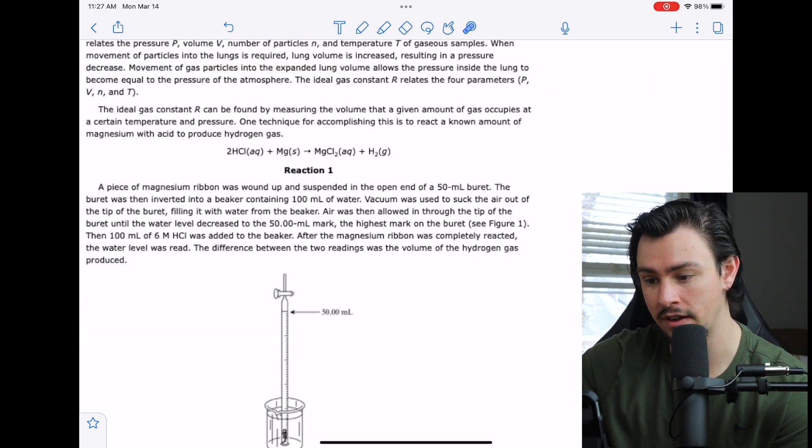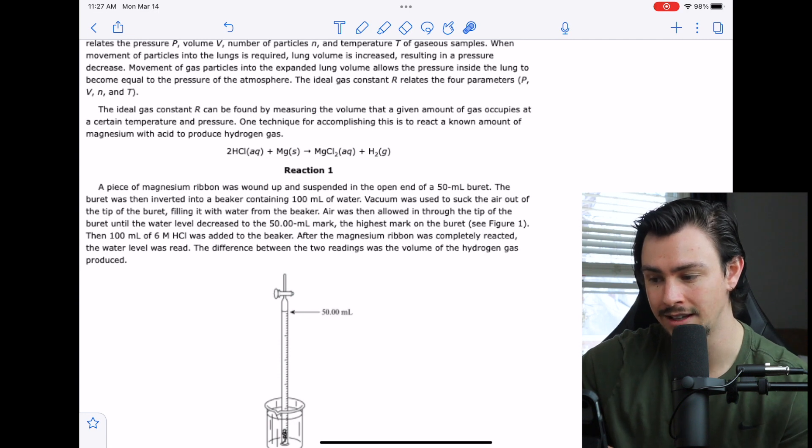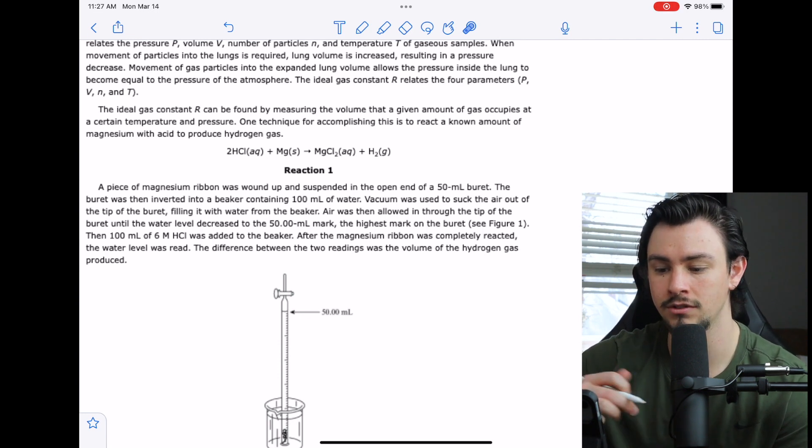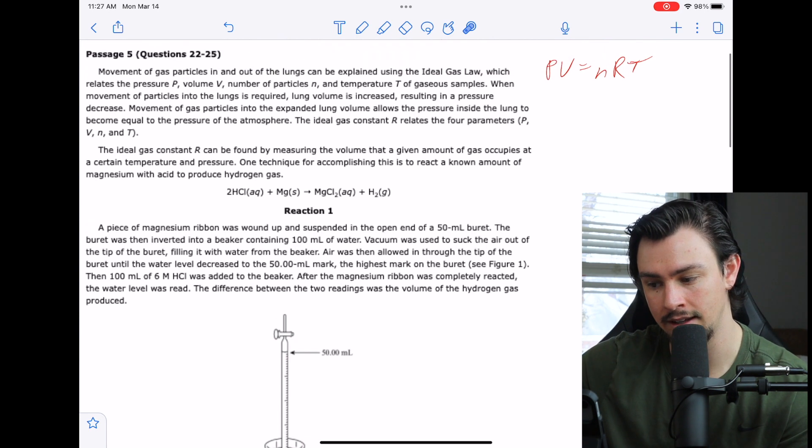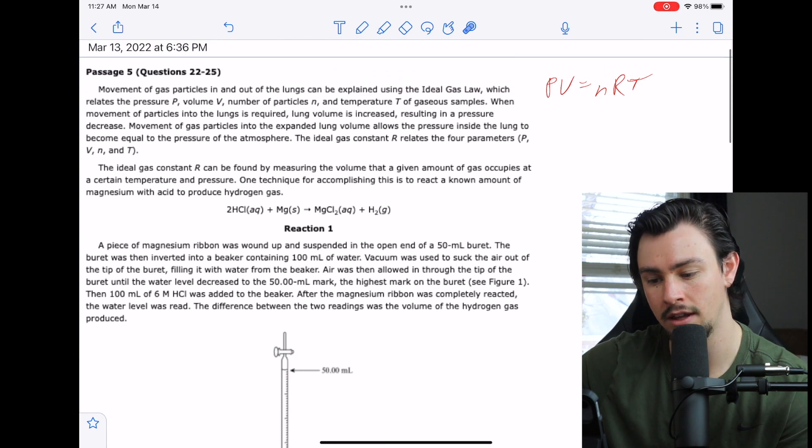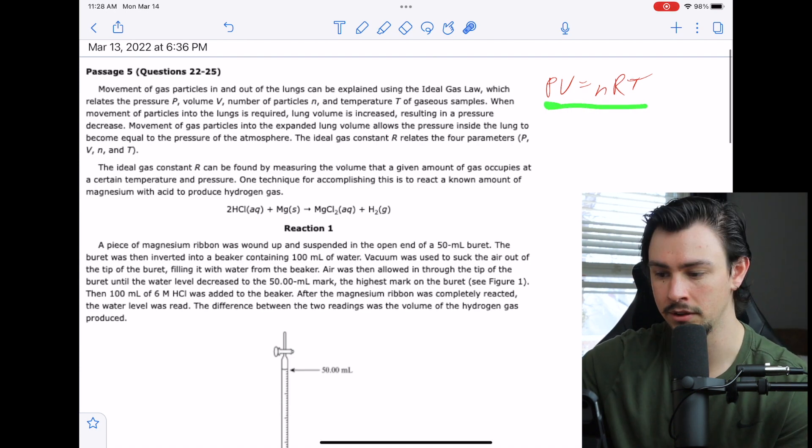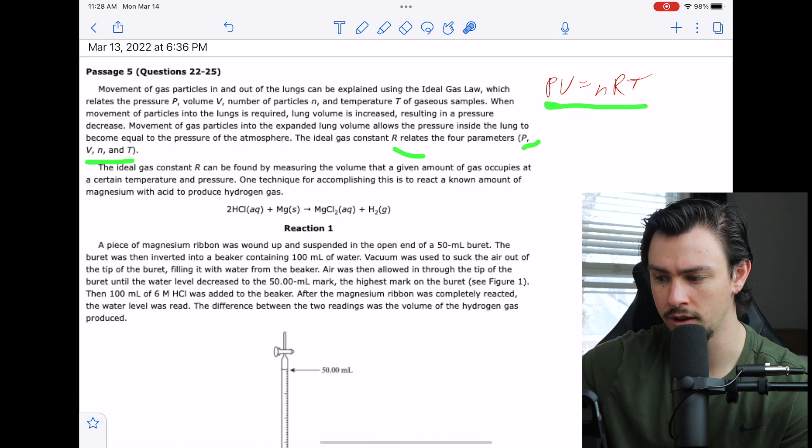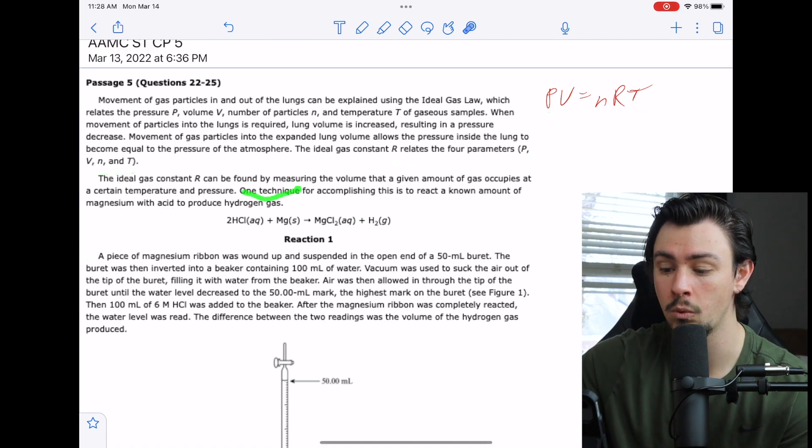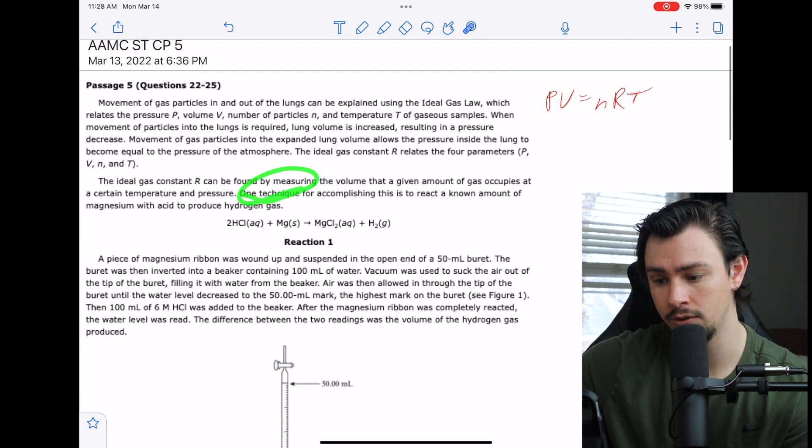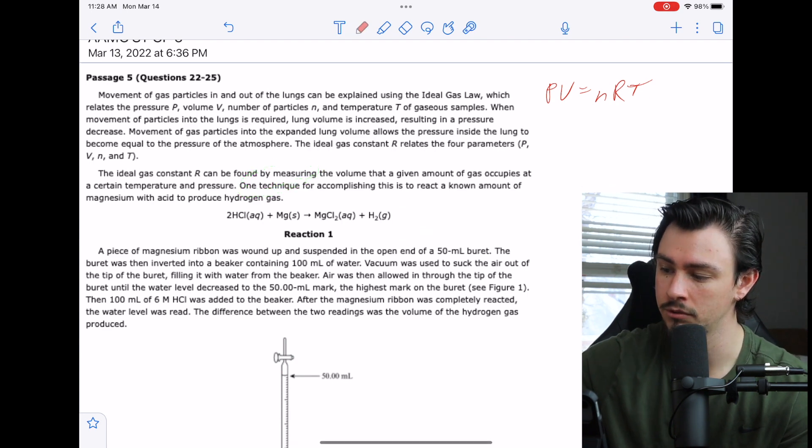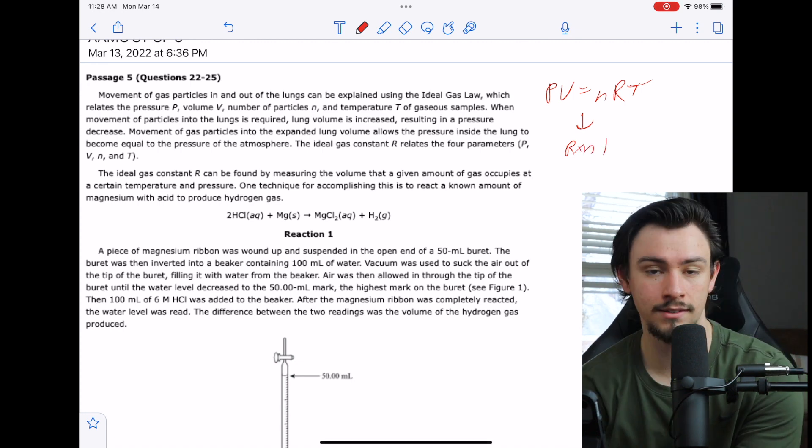The ideal gas constant R can be found by measuring the volume that a given amount of gas occupies at a certain temperature and pressure. One technique for accomplishing this is to react a known amount of magnesium with acid to produce hydrogen gas. So they just keep talking about this equation. They're giving you all the variables for it, and then they're telling you that there is a way to actually measure this gas constant. Apparently, this is how we found it, and that is reaction one. So I'm just going to say reaction one because that shows the purpose of it.